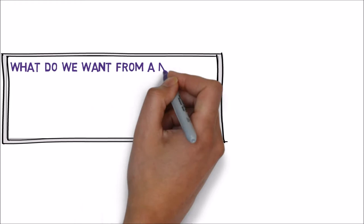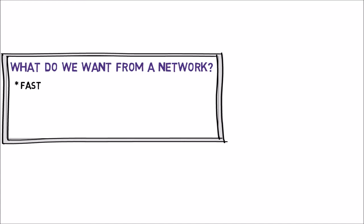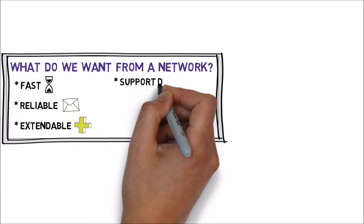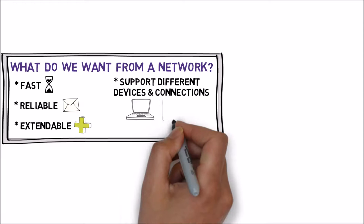Let's imagine a really good network — but what is a good network? What do we want from a network? Well, we want it to be fast, allowing fast communications — we don't want to wait long for a message to get from one host to another. It should also be reliable: when sending a message, we want the receiver to actually receive it. The network should be extendable, allowing more devices to join. We wouldn't want to start with two computers and not be able to add a third. The network should also support different devices and connections — a wired PC, a wireless laptop, and a cell phone, for instance.